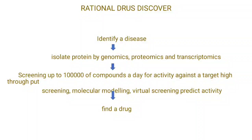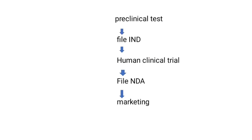The goal of post-market activity is to make sure approved drugs continue to work effectively for their intended purpose. Rational drug discovery uses modern techniques to select a lead compound or drug. In the traditional process, more time was needed to find a suitable drug, but now it is simpler. The steps include: identify a disease, isolate protein by genomics, proteomics, and transcriptomics, screen up to 1 lakh compounds a day for activity against a target using high-throughput screening, molecular modeling, and virtual screening to predict activity, then find a suitable drug. The subsequent steps are similar to traditional methods.